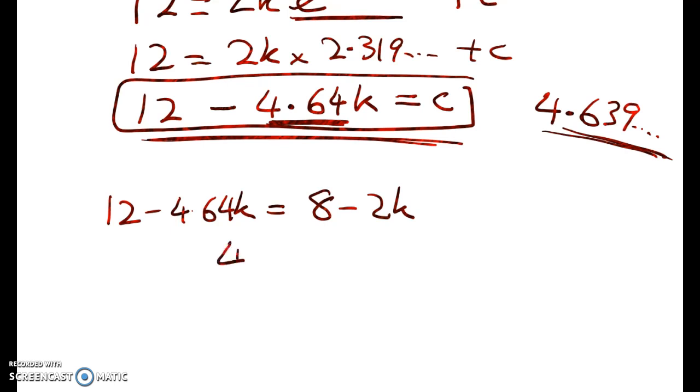12 minus 4.64k is equal to 8 minus 2k. Okay, so 4 is equal to 4.64k minus 2k, right? Subtracting this from both sides and adding this to both sides. So 4 is equal to 2.64k.